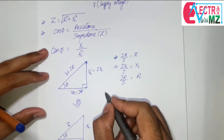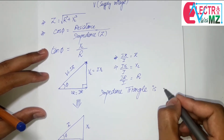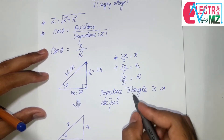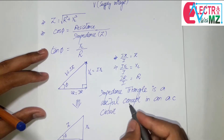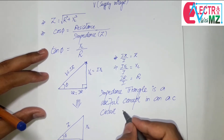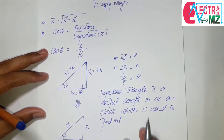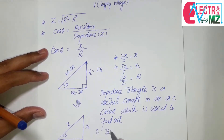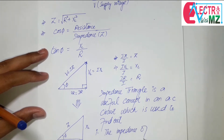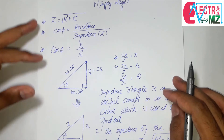The impedance triangle is a useful concept in an AC circuit. It is used to find out, number one, the impedance of the circuit — that is, Z equals the square root of R squared plus XL squared — in the case of an RL series AC circuit.